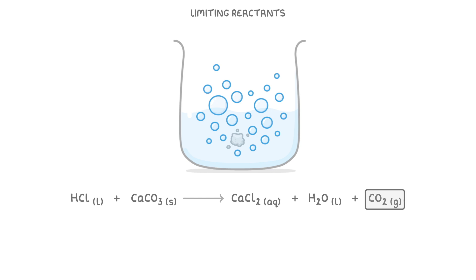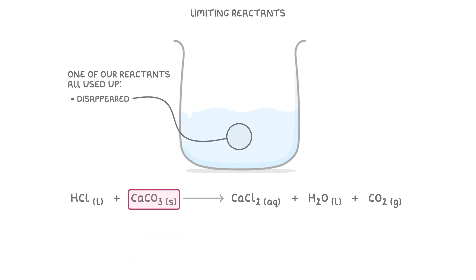After a while though, all the calcium carbonate will disappear and the fizzing will slow down and eventually stop. So at this point, we know that one of our reactants must have all been used up because the reaction stopped. If we can see that the calcium carbonate has all disappeared, then we know that it must have all been used up. And so we would call it the limiting reactant, because it limited how much product could be produced.